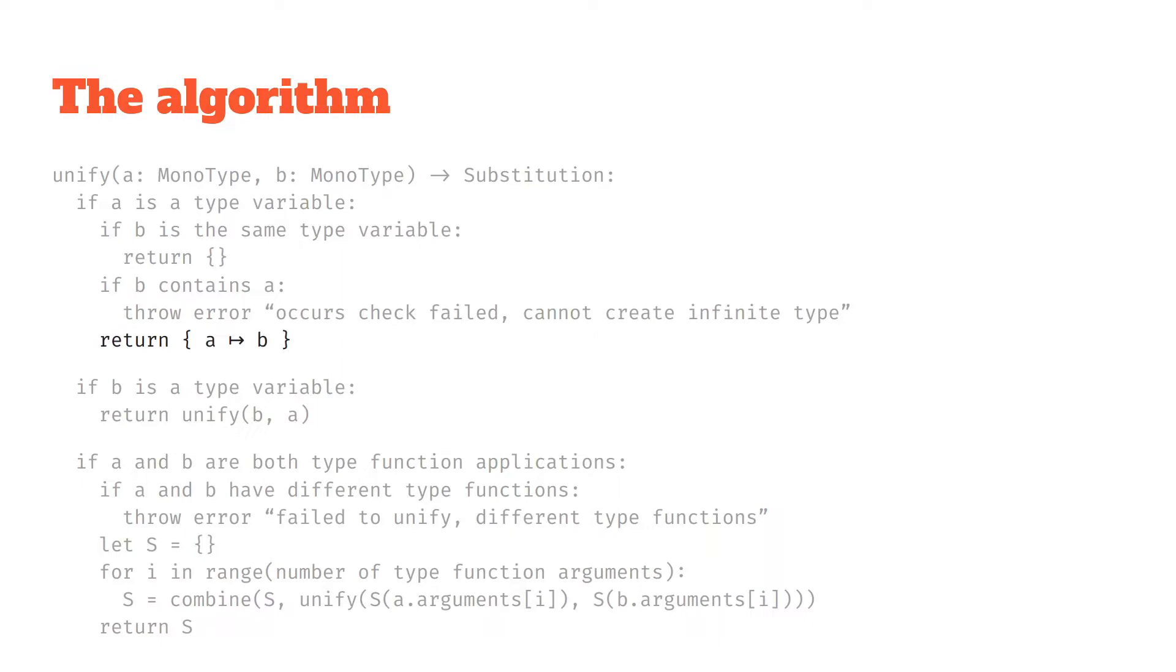And finally, if b doesn't contain a, well in that case it's safe to map a to b, and we do that because we've just got a type variable, and it's got to match the other thing, so we may as well make them match.